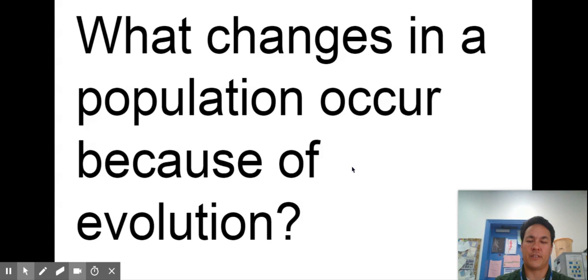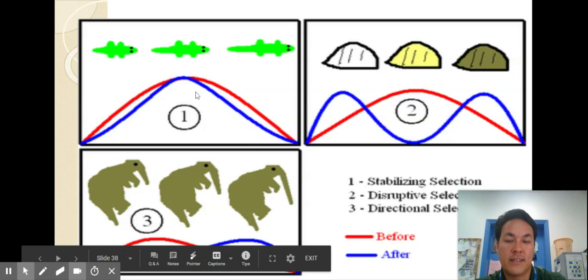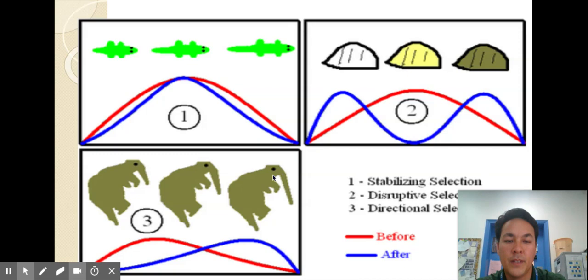All right what changes in a population occur because of evolution right so if we said evolution doesn't act on individuals it acts on populations but what happens due to it. And so we did a POGO on this we looked at stabilizing selection disruptive selection and directional selection. I'd like you to be able to give an example of each of them these are simplistic but good.